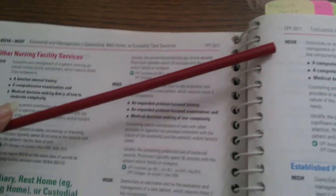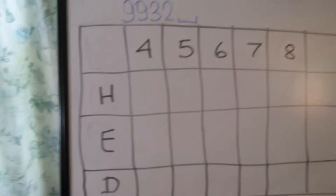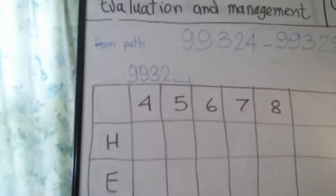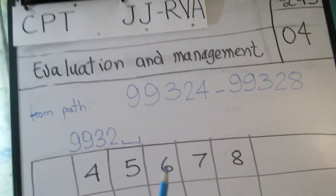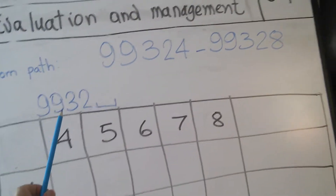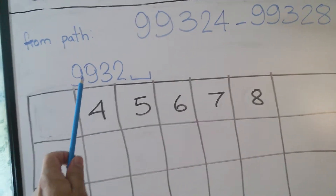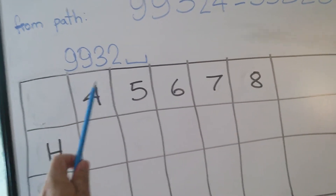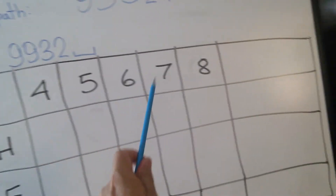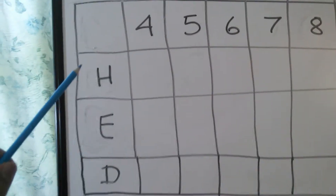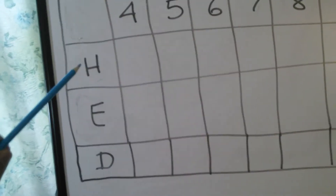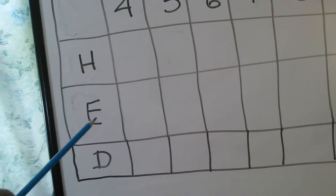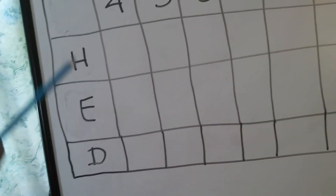How do we choose which one? By three criteria. I've made a little table here. The codes range from 99324 to 99328 — the characters that are the same for all of them are 9-9-3-2, and the character that changes is the last digit: 4, 5, 6, 7, or 8. The three criteria to choose the right code are: history, examination, and decision making.